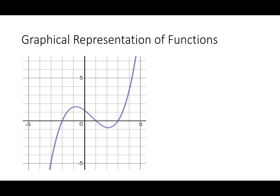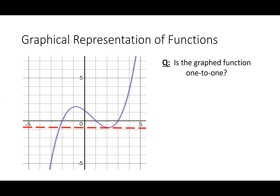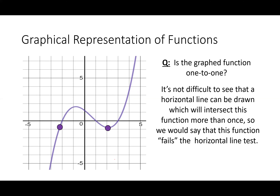Let's consider this function again — we know it's a function. Is this thing one-to-one? Try drawing a horizontal line to determine that. Nope, definitely not one-to-one. Here I hit it twice, and I could draw lines that hit it three times. Ultimately it fails. Since this fails the horizontal line test, it's absolutely not one-to-one.